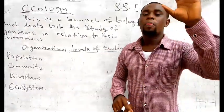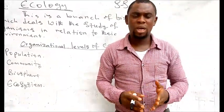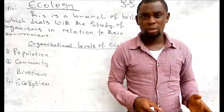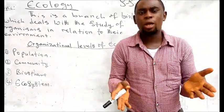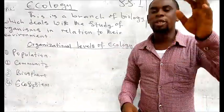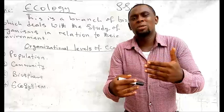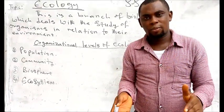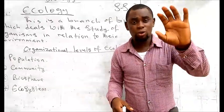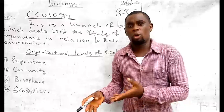One of the categories is producers. Producers involve all the green plants that can manufacture their own food. The second category mainly involves the animals — the consumers. Then the last one involves the decomposers, which includes all the organisms that can cause substances to decay when they are dead — things like tamarides, bacteria, viruses, and fungi. These are the biotic components of an environment.